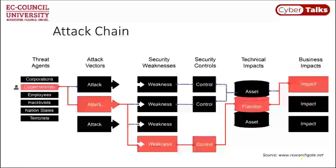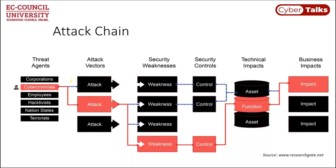At the fundamental level we should consider the attack chain model. We have to identify the threat agent — cyber criminals, employees, activists, nation states, terrorists, or competitor corporations — identify the reason they're targeting your business assets, and then understand the attack vectors they use. The tools are honestly available to anyone nowadays, on public platforms we use for pen testing, GitHub, and similar sites.